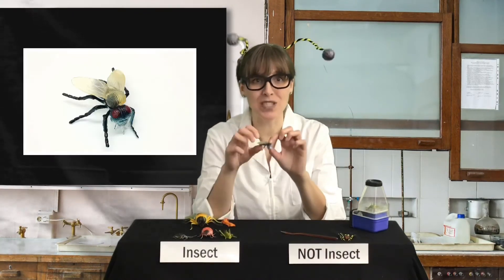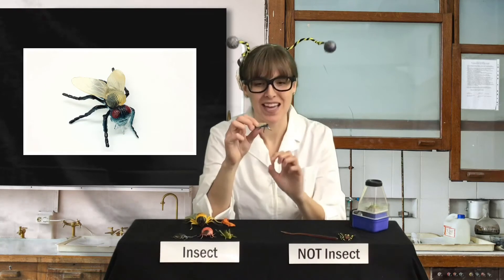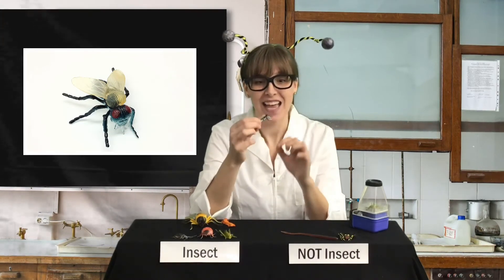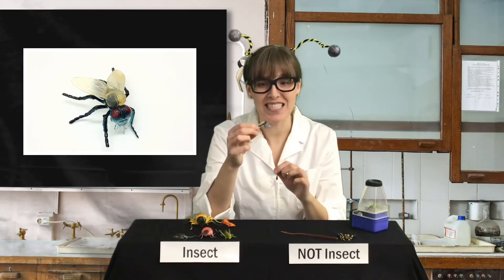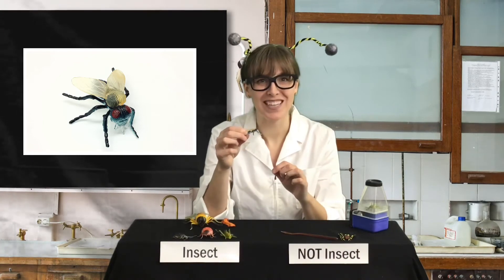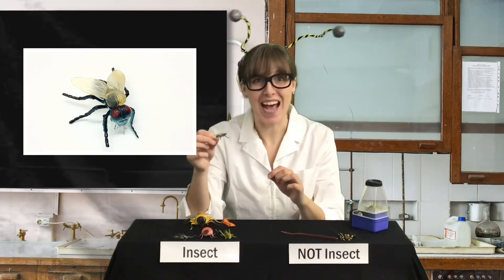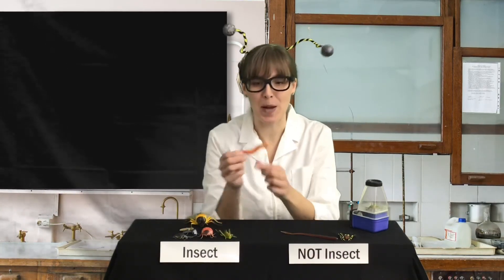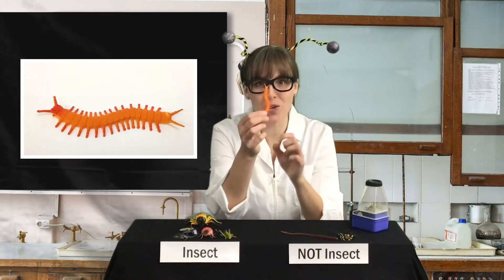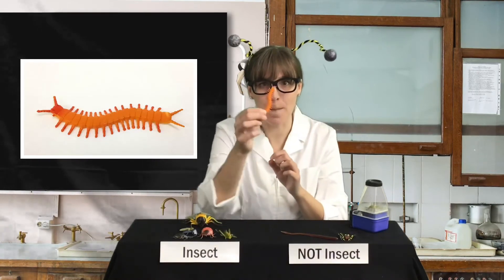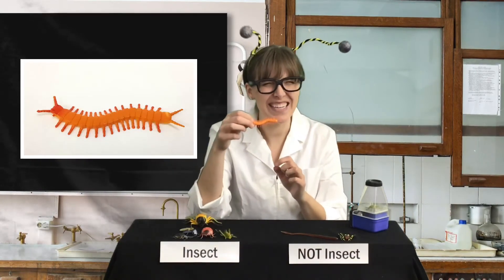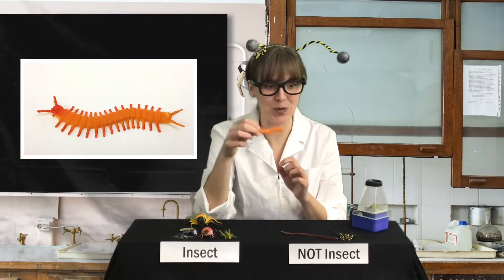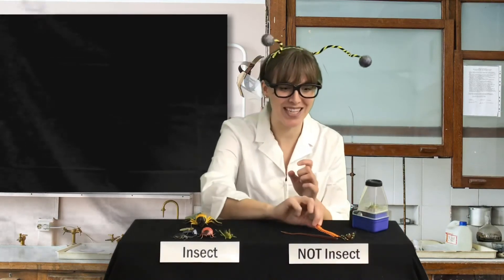How about a housefly? A housefly has six legs, antennas, and three body parts. Yes, that's an insect. How about a millipede? Look at all those legs on a millipede. Is that an insect? No, it's not. It has too many legs.